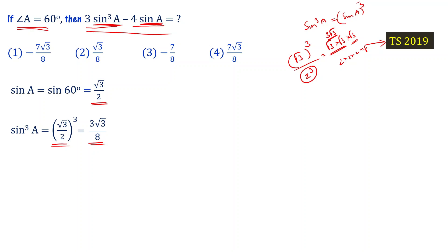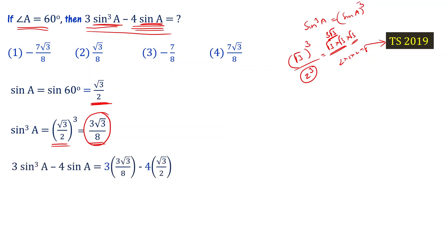Now let's substitute that into the equation. We have 3 times sin³A minus 4 times sinA. That gives us 3 times 3 root 3 divided by 8, which is 9 root 3 divided by 8, minus 4 times root 3 by 2, which is 2 root 3. So we have 9 root 3 divided by 8 minus 2 root 3 divided by 1.